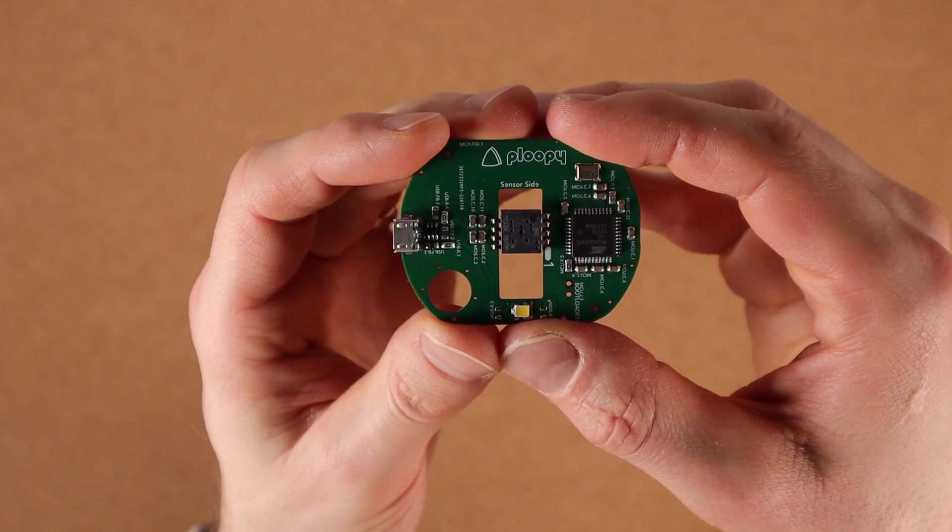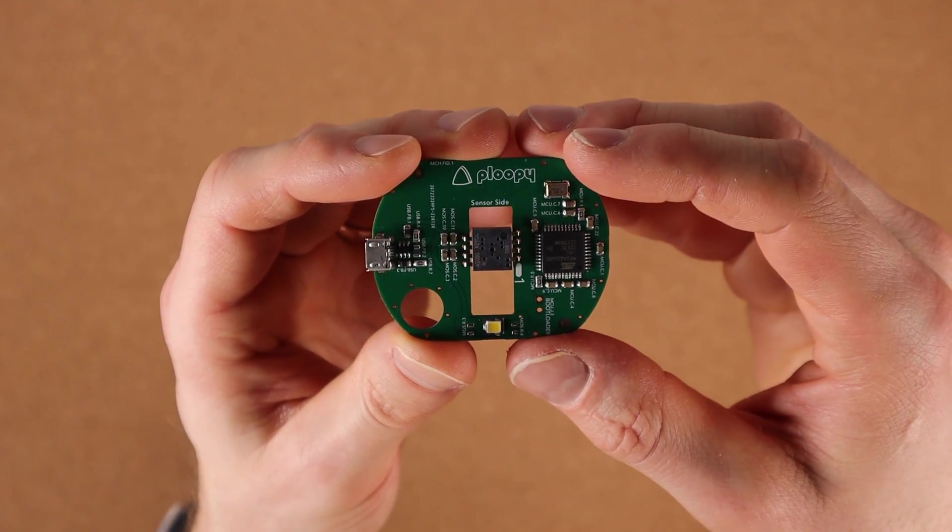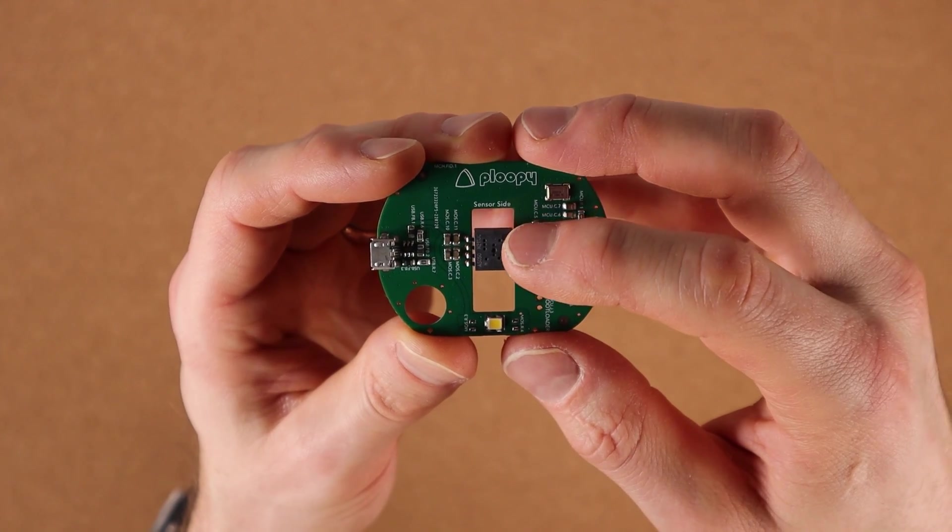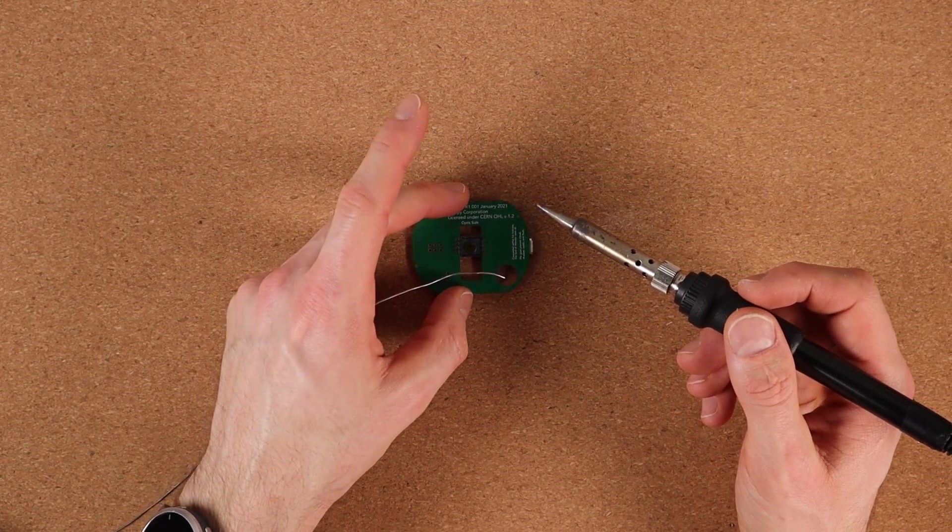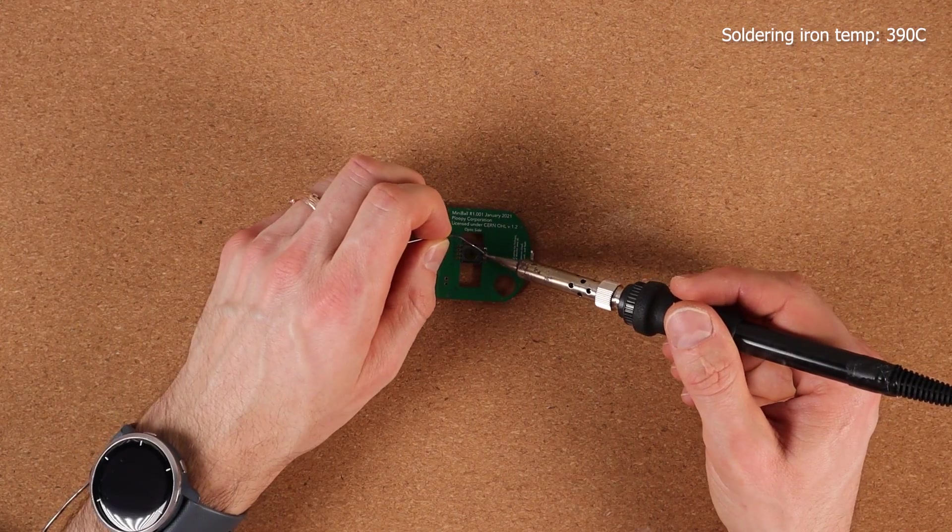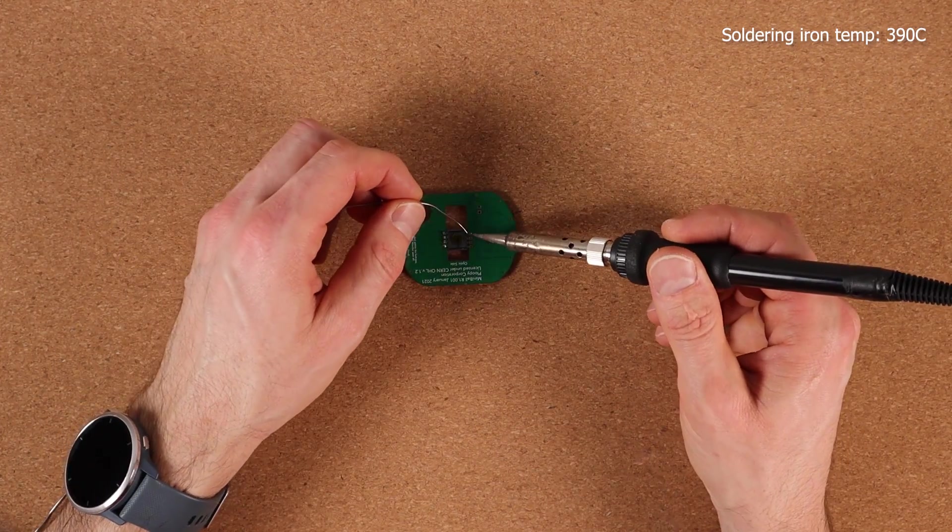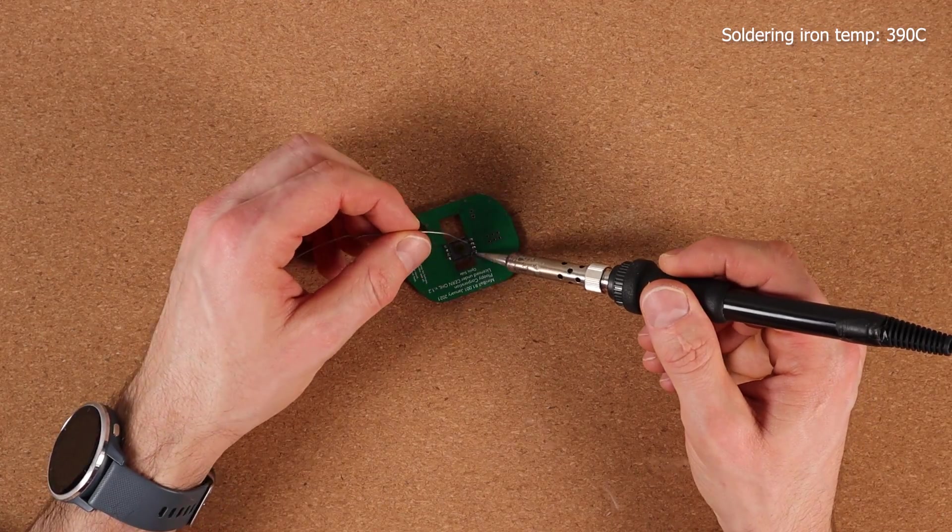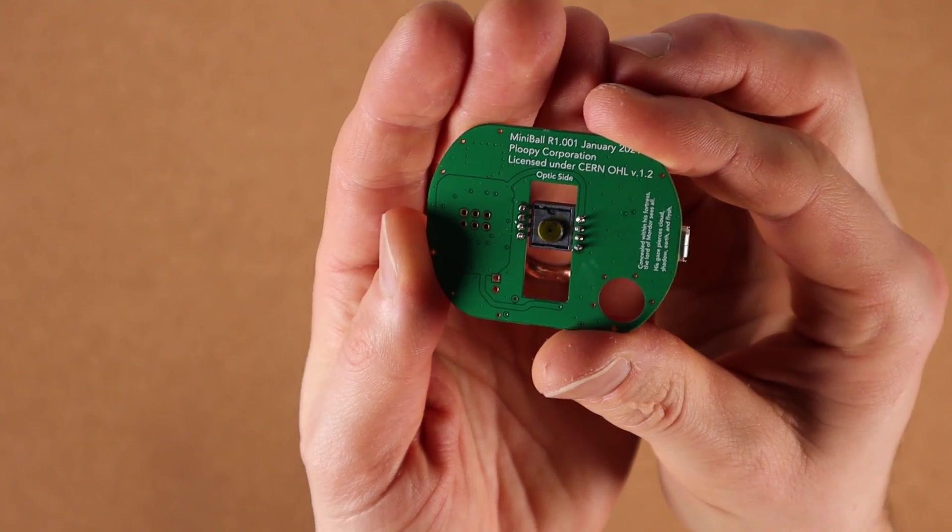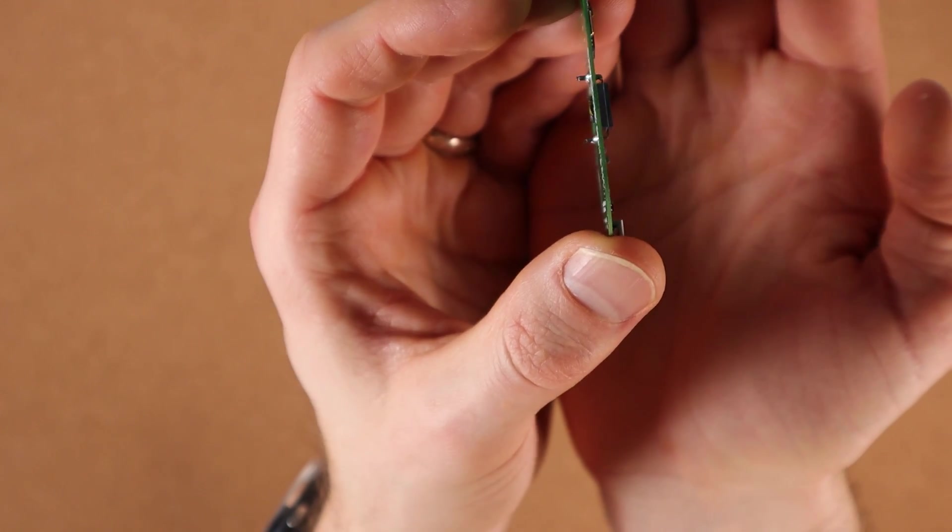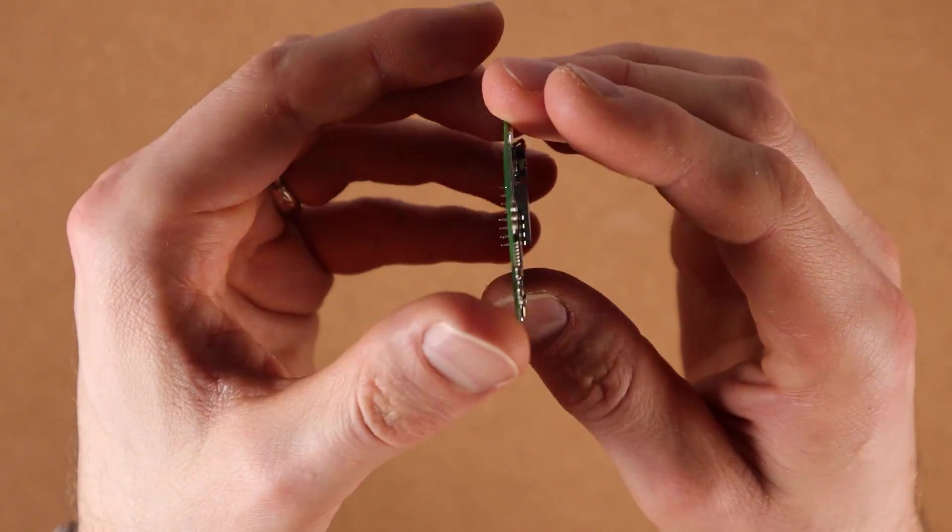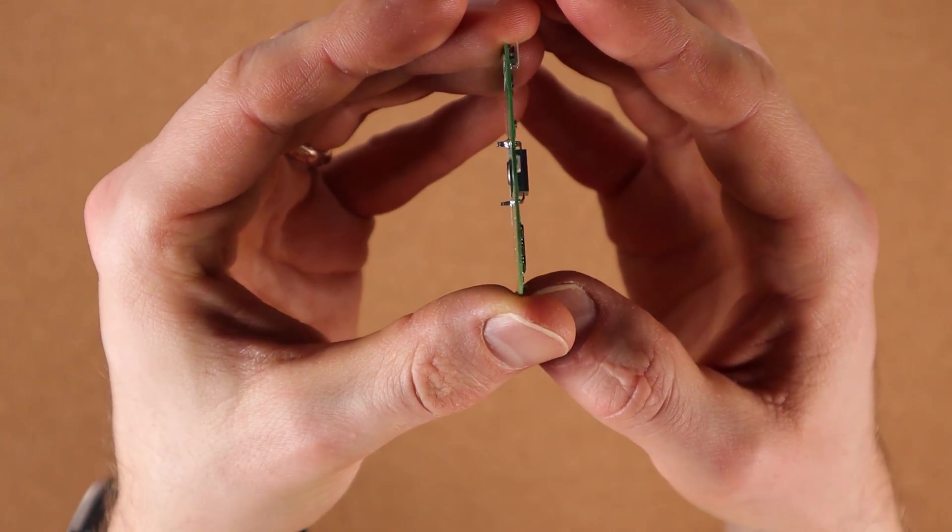So once you're completely sure you've got the sensor in the correct orientation, flip it around and solder those joints. I'm making sure it's sitting completely flat here. And just as a reference, my soldering iron is set to 390 degrees Celsius. So at this point, it's a good idea to inspect your solder joints. You can have a look, see if it's sitting completely flush with the board, see if there's any gaps there.